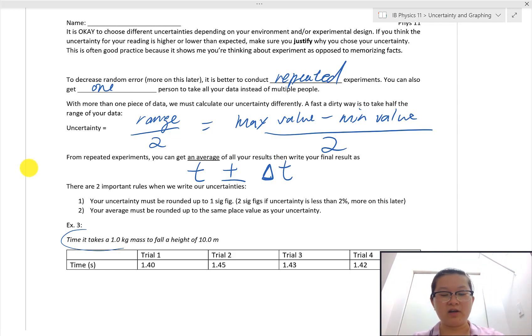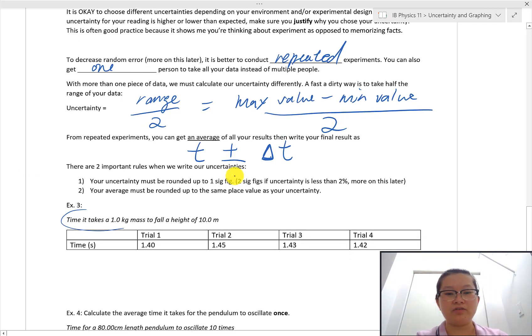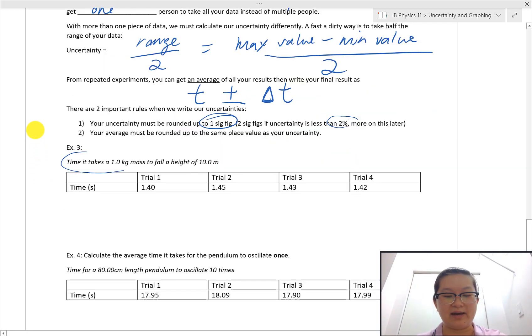So a few rules, when we talk about uncertainties, usually you round your uncertainties to one significant figure, with exception when you have a very small uncertainty, which is less than say 2%. But otherwise generally we use one uncertainty. And whenever you report your uncertainties and your average value, making sure your average value is rounded correctly. And so that the place value of your uncertainty matches the last place value of your average. I'll do an example to show you what that means.